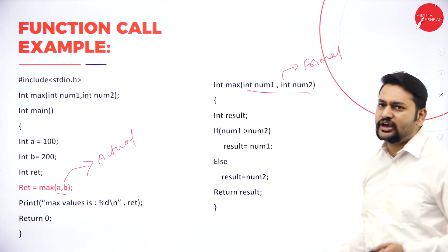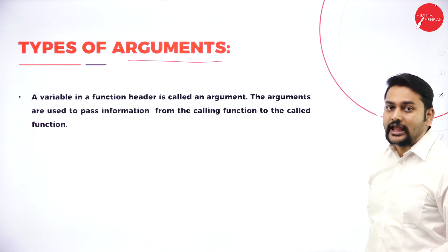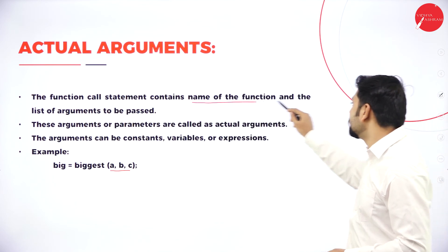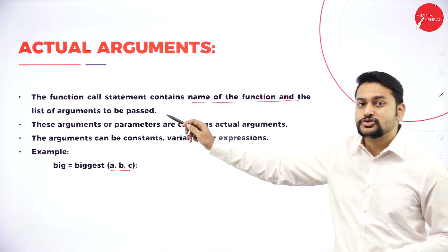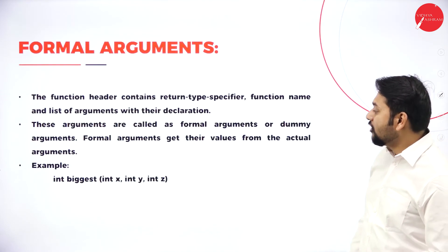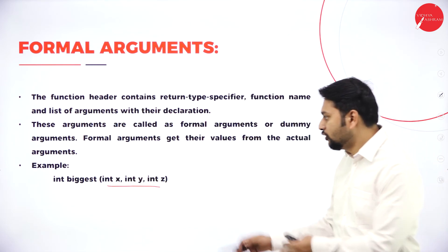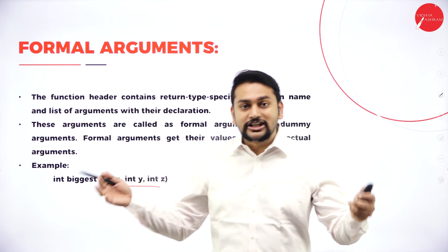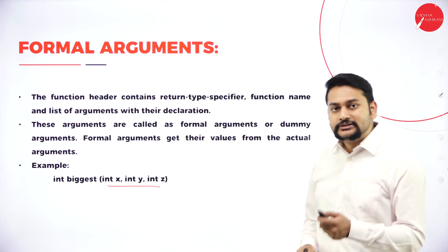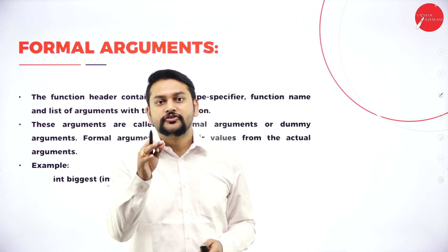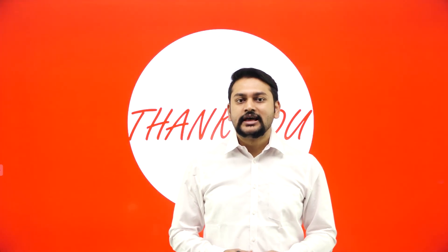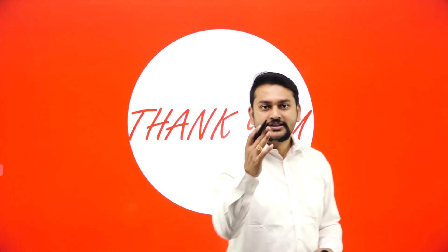This is the only difference you need to observe: the arguments in the function call statement — the name of the function and the list of arguments passed — are called actual arguments. Whatever you have in the function definition are called formal arguments. This is all about the function call and the different types of arguments. Thank you, bye bye.